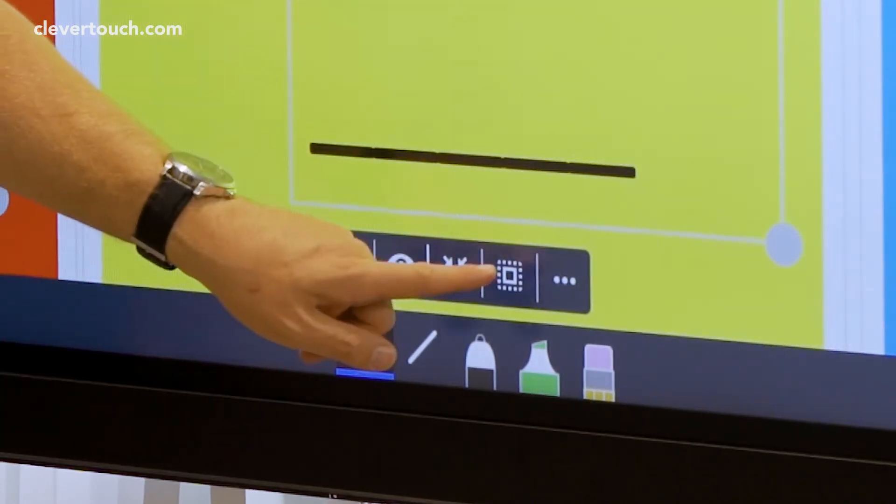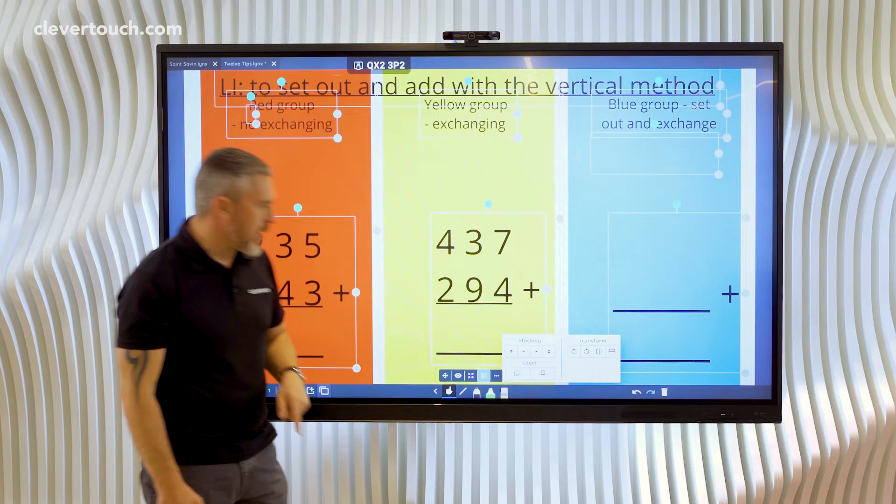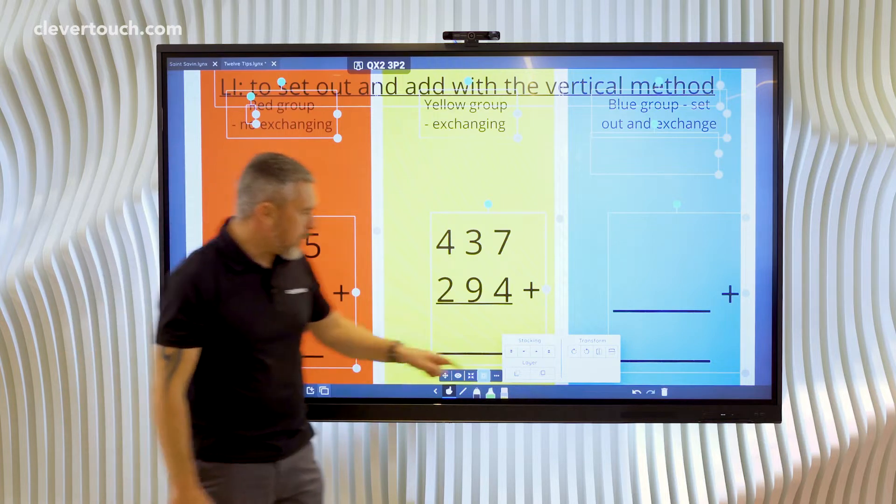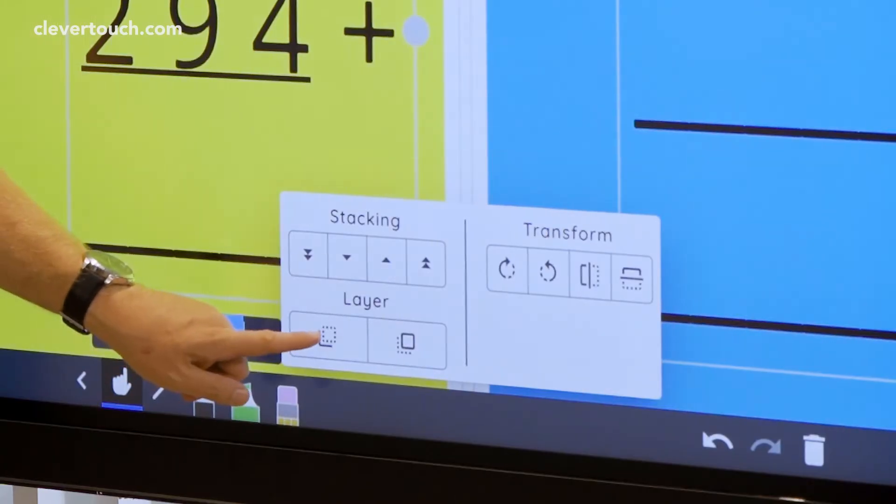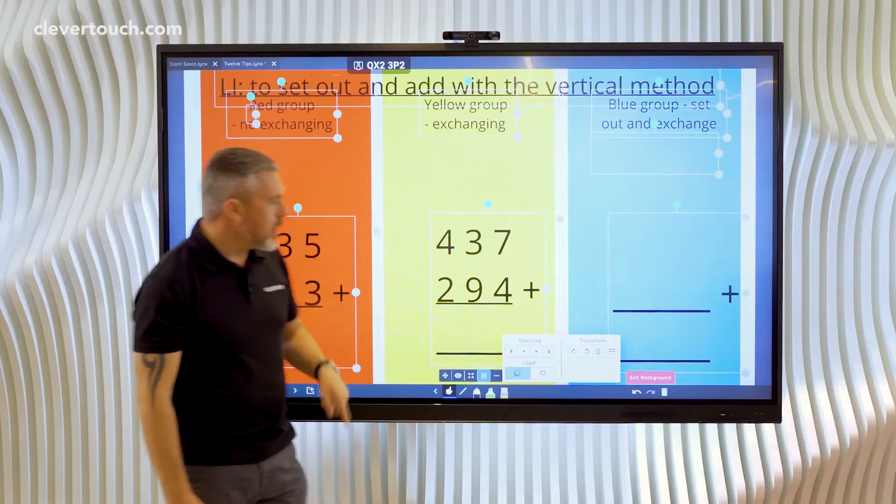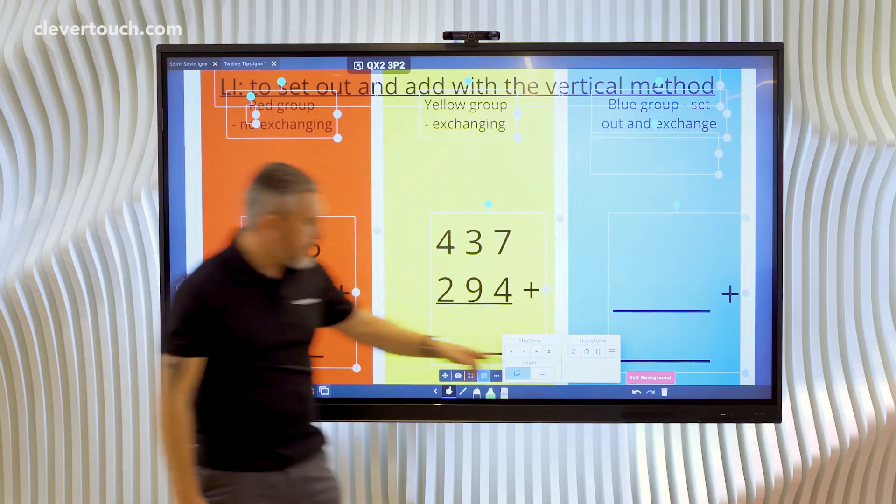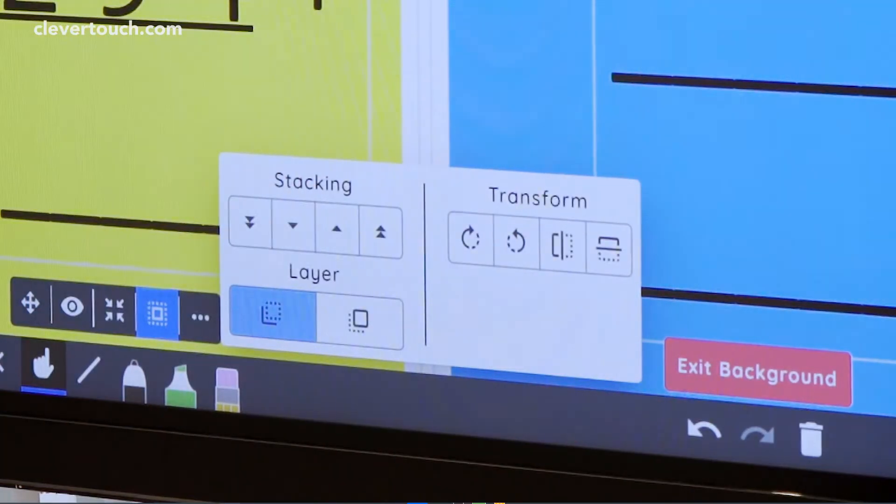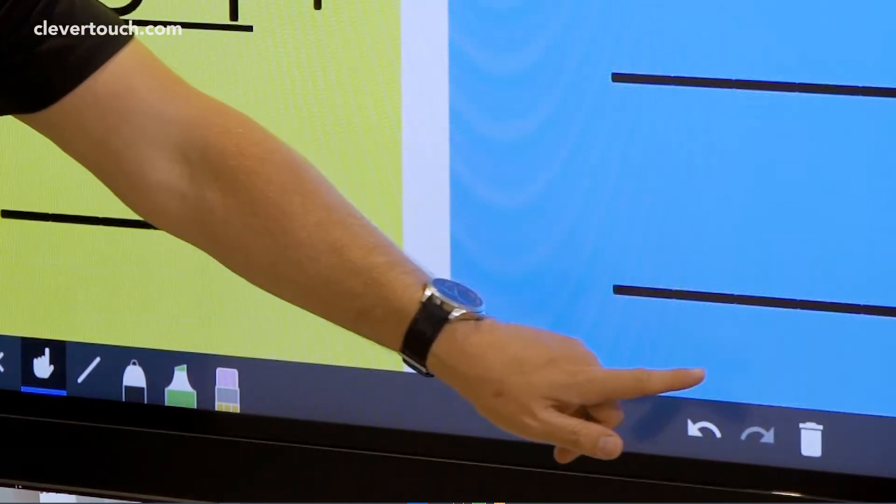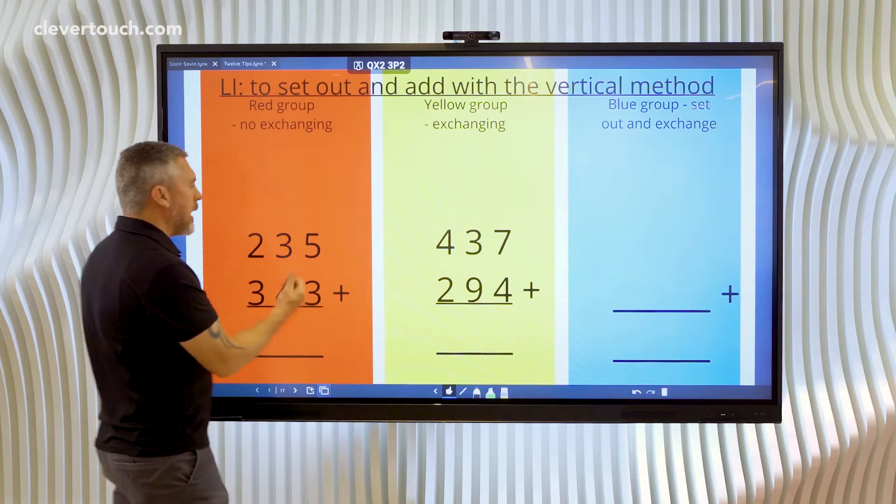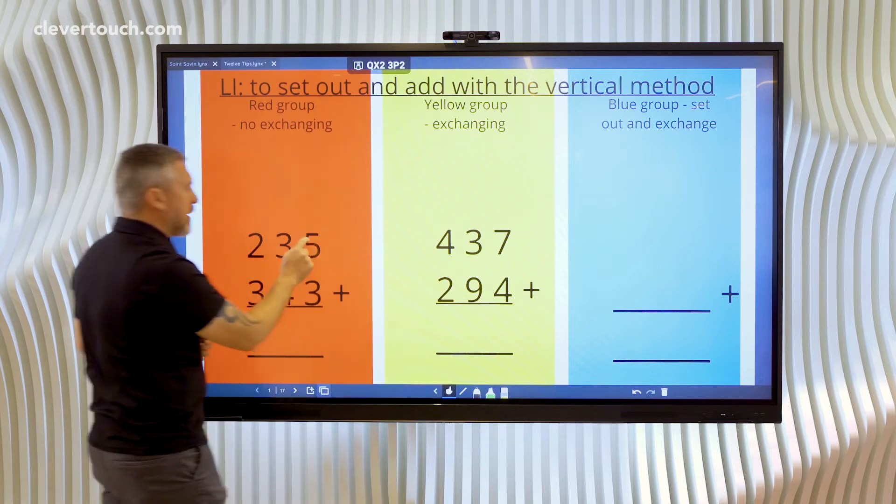So now if I come here to the arrange and transform icon, I'm going to send all of these things to the background layer. I can tell I'm in the background layer because it says over here exit background. So if I tap on that now I come out of the background layer and now with the cursor selected I can't select any of these things.